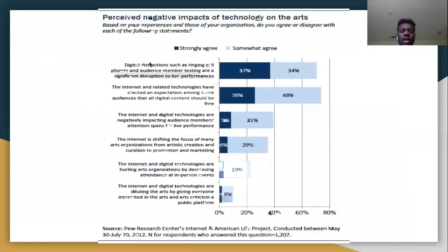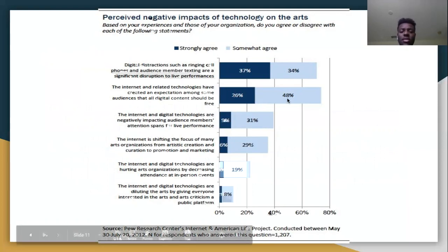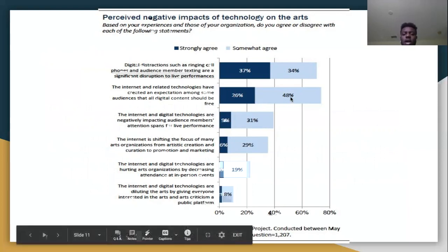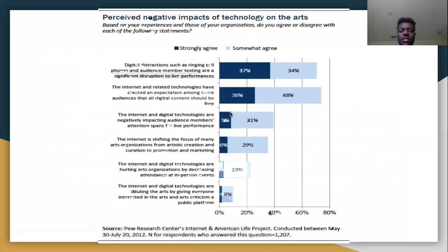This shows how digital distractions impact a certain percentage of people. Distractions include ringing cell phones, the internet, and social media, among other things. As you can see, 37% somewhat agree that these distractions affect them.